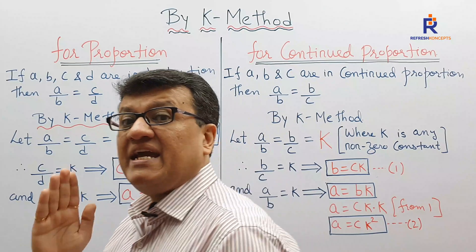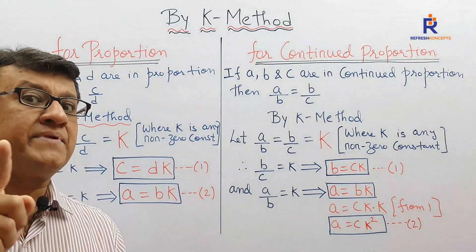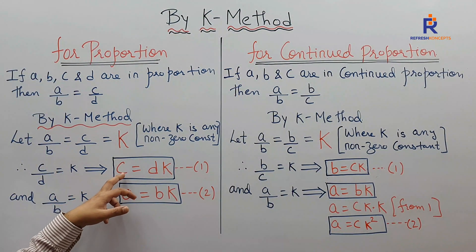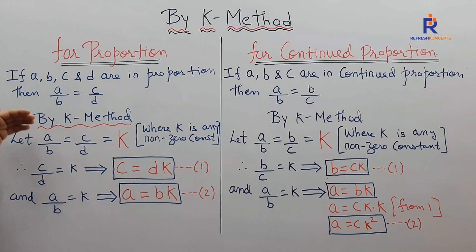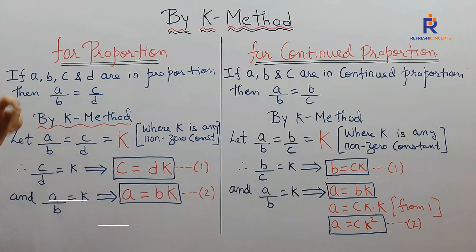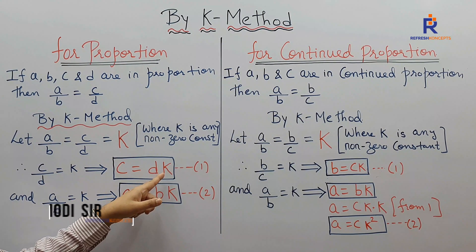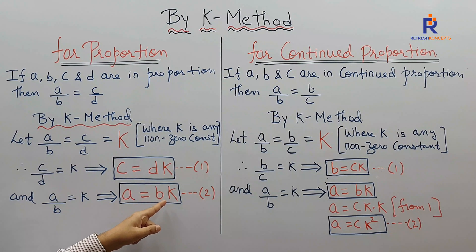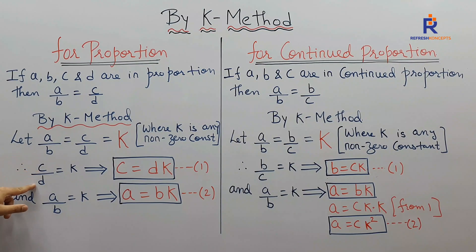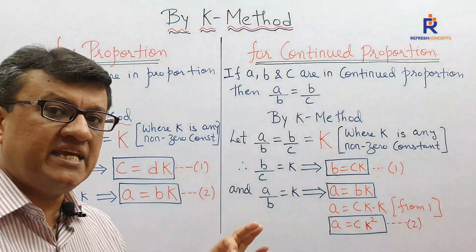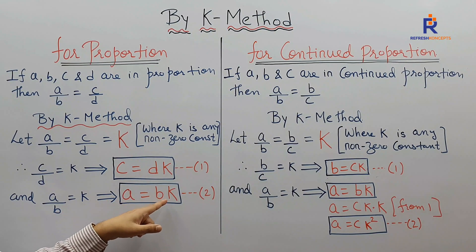From the left-hand side, A by B equals K, so A equals BK. Whenever dealing with proportion proof sums: wherever you see C, replace it with DK; wherever you see A, replace it with BK. Now the question arises — what about B and D? B will be written as B only; D will be written as D only. Only C is replaced by DK and A is replaced by BK.